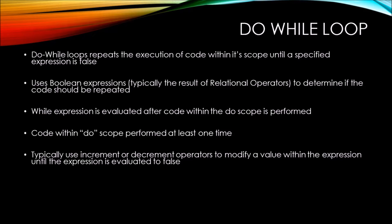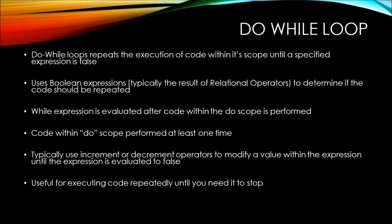Typically, just like with the while loop, we use the increment or decrement operator to modify a value within the expression until the expression can be evaluated to false. The do-while loop is useful for executing code repeatedly until you need it to stop. And we need to be careful of infinite loops.